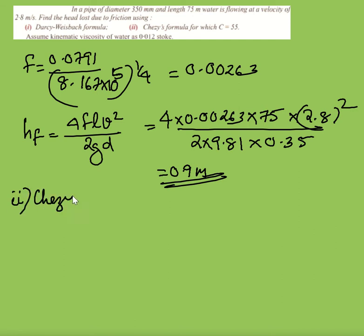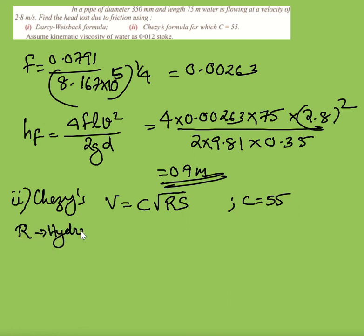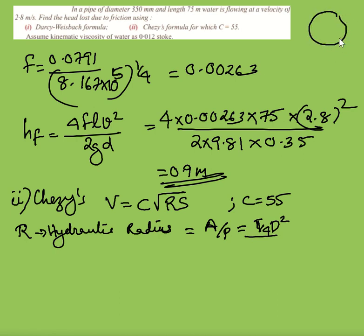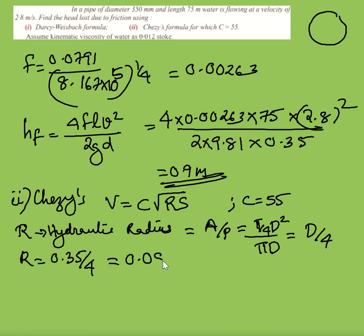For Chezy's formula: V = C√(RS), where C = 55. The hydraulic radius R is the ratio of area to perimeter: R = (π/4 × D²) / (πD) = D/4. So R = 0.35/4 = 0.0875.